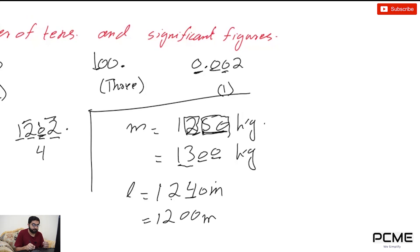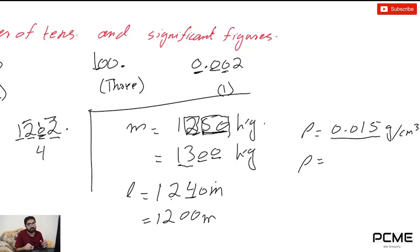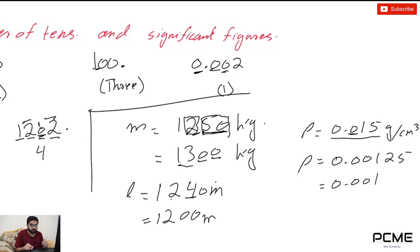Let me give one more example. The density of some object is 0.015 grams per centimeter cubed. I need to round to two significant figures — but it's already two significant figures, because the leading zero has no significance. So it remains 0.015 grams per centimeter cubed. However, if I have 0.00125 and I round to two significant figures, that becomes 0.0013.